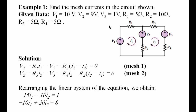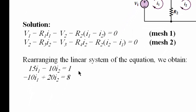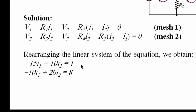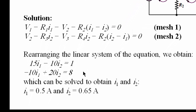By substituting the given numbers into these equations and rearranging, we get two simplified equations. Solving these two equations gives us the mesh currents I1 and I2.